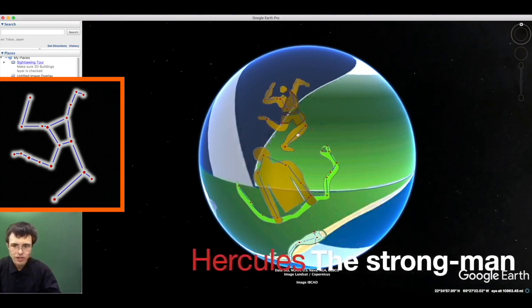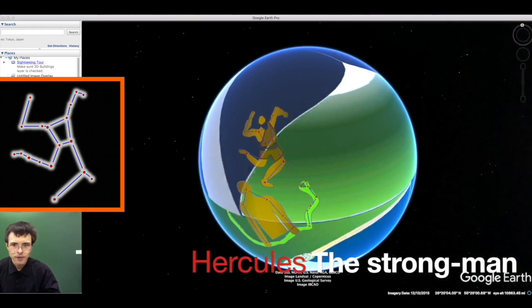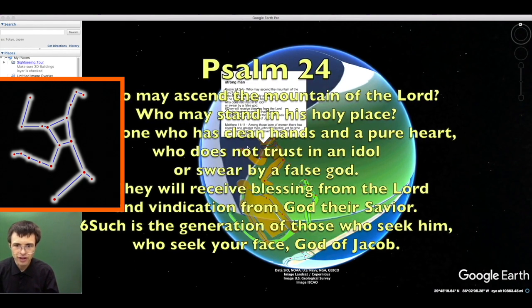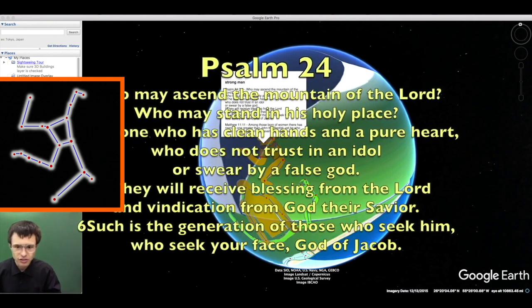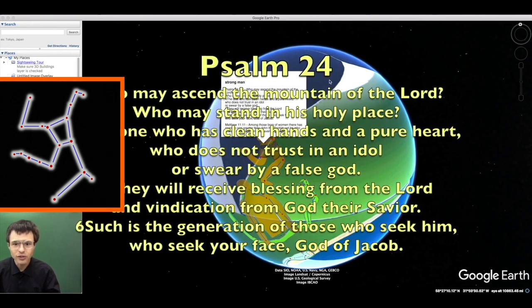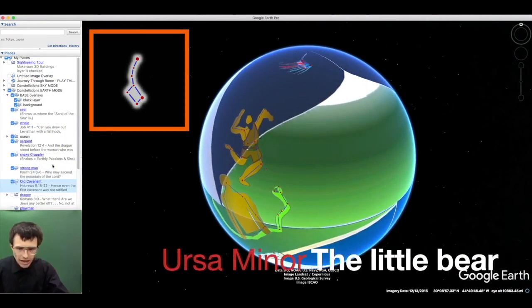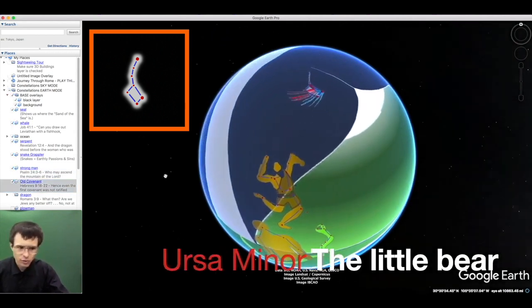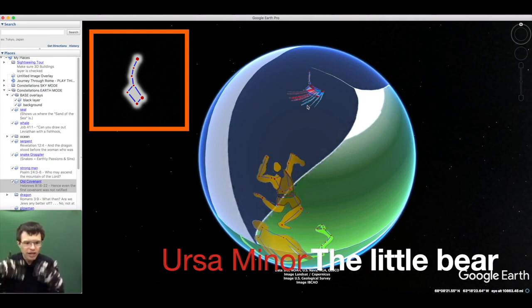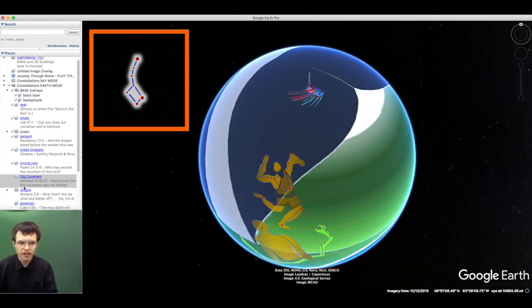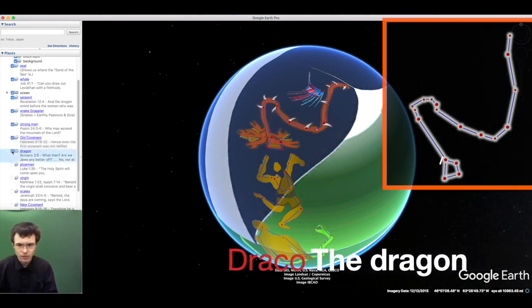But there have always been those who conquered their passions, symbolized by the strong man. This is the constellation Hercules. Who may ascend the mountain of the Lord, and who may stand in his holy place? He whose hearts are clean, whose eyes are pure, who desires not the vanity of earth. And throughout all the Old Testament, these people were seeking to achieve the promises that God had promised to those who did this, which is symbolized by the Old Covenant. They were seeking to have the blood and the water of the covenant poured out upon them.